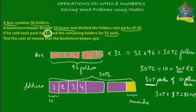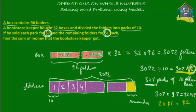He also sold the remaining folders for one dollar each. After packing the folders into packs of 10, there were two folders remaining. So the two remaining folders were sold for one dollar each, giving the shopkeeper two dollars from the remaining folders.